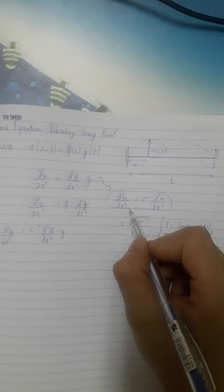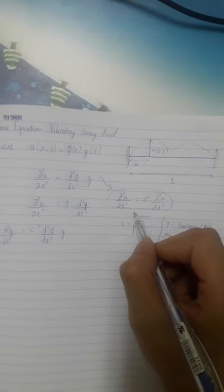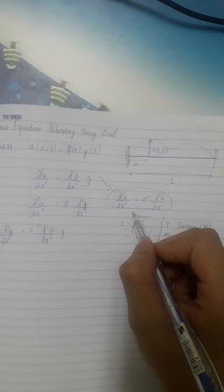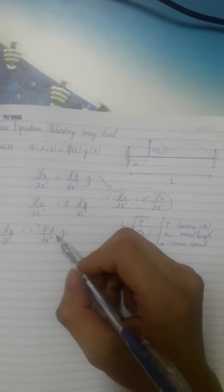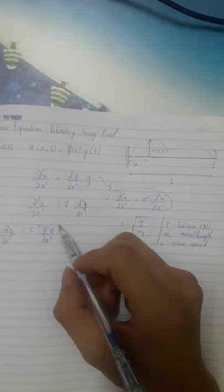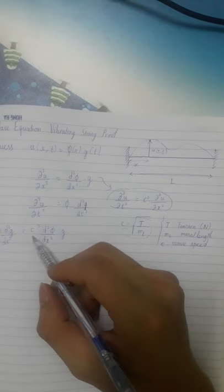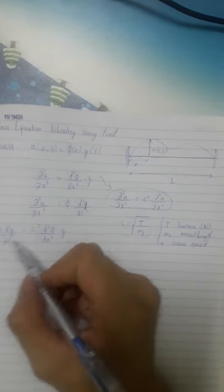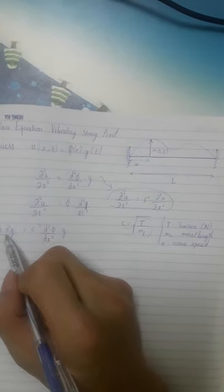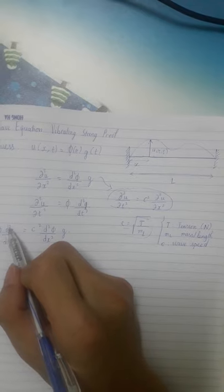On the left-hand side, we're going to get this expression: it will be phi times d²q/dt².